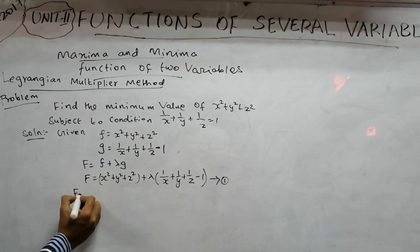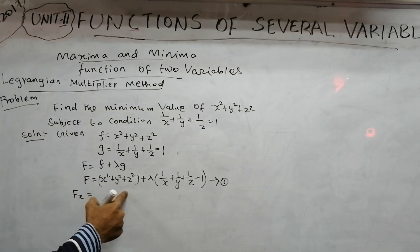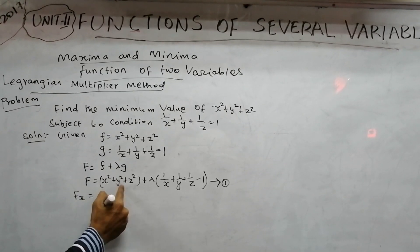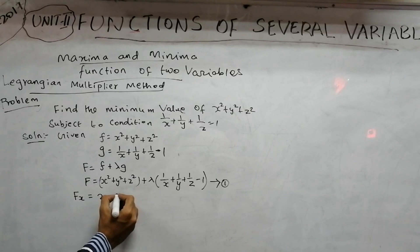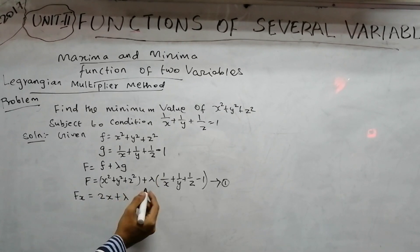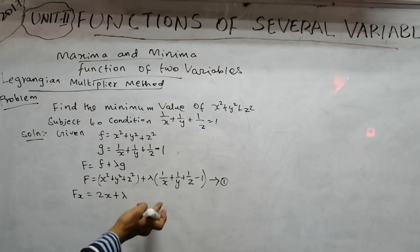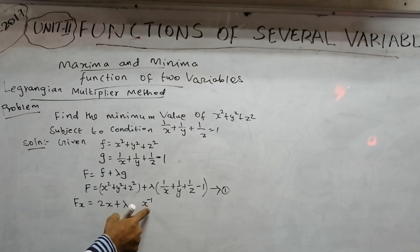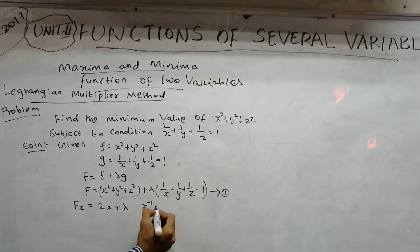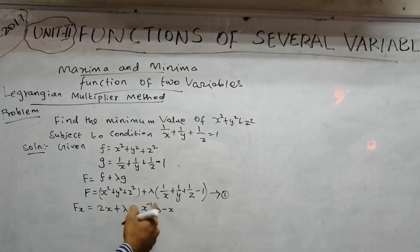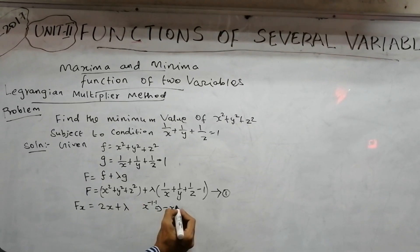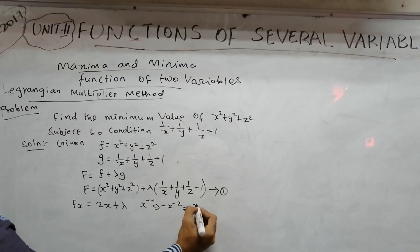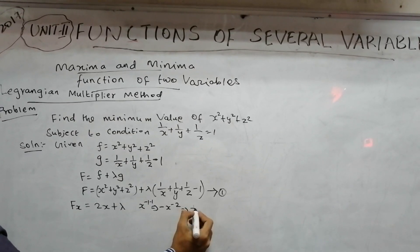We differentiate equation 1 with respect to x. Differentiating x² gives 2x. The terms y² and z² are treated as constants and give 0. For λ·(1/x), we differentiate 1/x, which is x⁻¹, giving −x⁻² = −1/x². So Fx = 2x − λ/x².